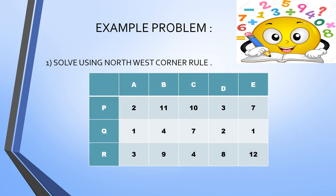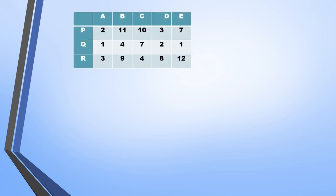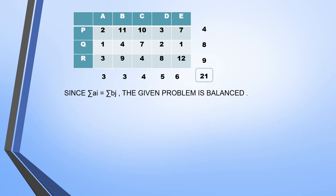Here is an example problem where we are going to find the minimum transportation cost by applying the northwest corner rule. Supply is given as 4, 8, and 9. Demand is given as 3, 3, 4, 5, and 6. Each small box is called a cell and the value within each cell is called Cij, which is the cost of transportation for transferring goods from m source to n destination. First, we need to check whether the problem is balanced. The sum of supply is 21 and the sum of demand is also 21. Since summation of Ai equals summation of Bj, our given problem is balanced.